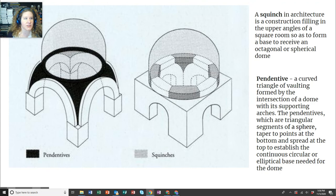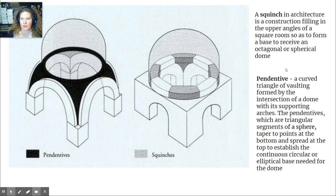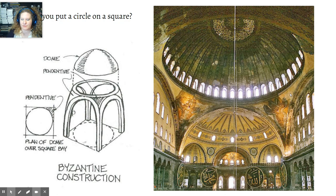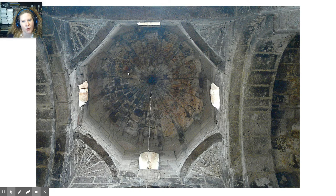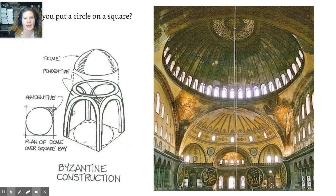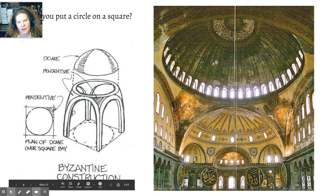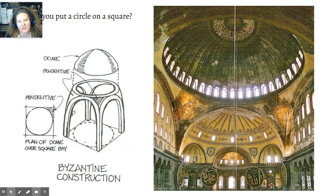All right, squinches versus pendentives. And so there we see squinches because we see these straight lines to help support the dome on this building. And the pendentives, right, so we see how the pendentives hide the beams. There are much thicker support systems behind these pendentives, but the pendentives help to mask that.